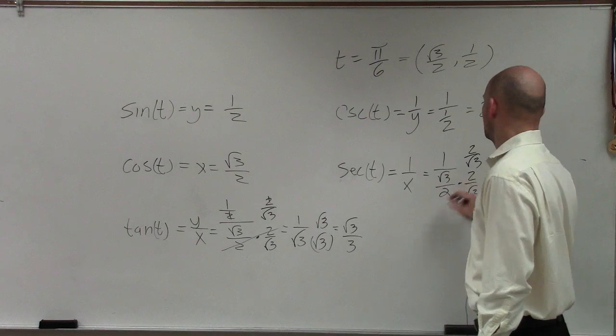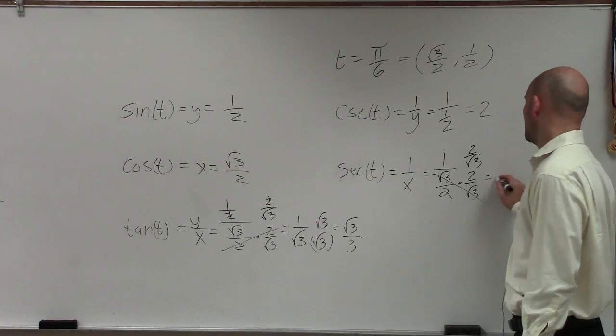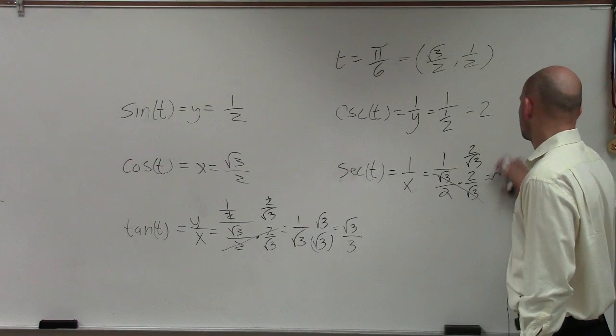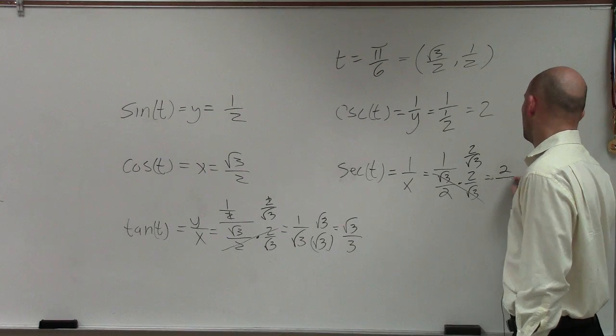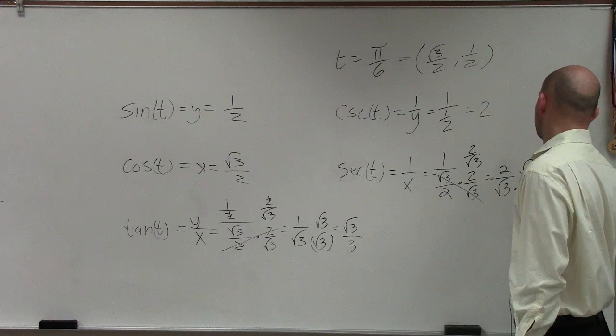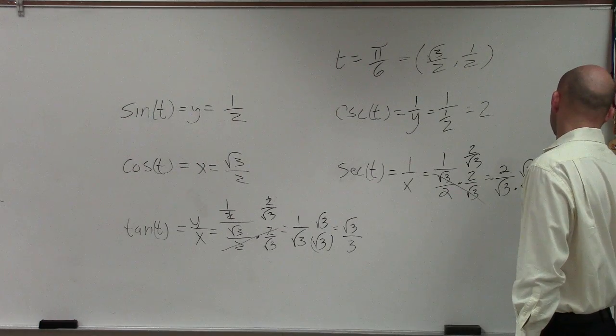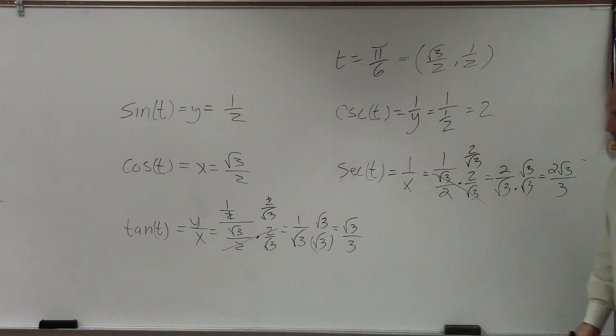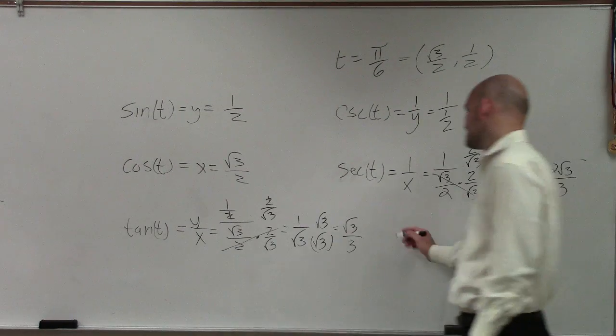That multiplies to 1. Left with 2 over the square root of 3. Then I rationalize the denominator. Final answer is 2 square root of 3 over 3.